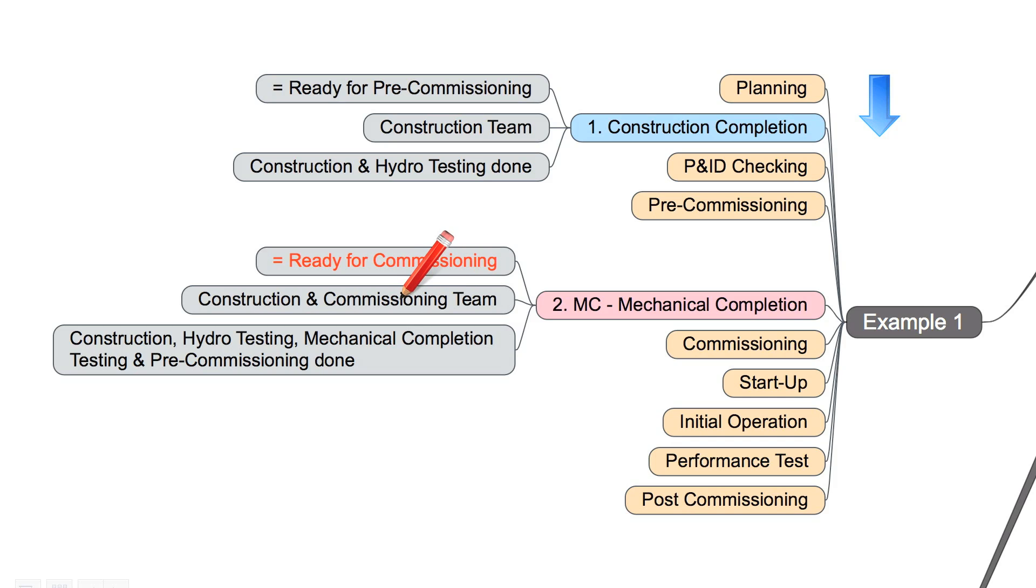And in this task the construction and commissioning team is involved. And this means in detail construction is done, hydro testing is done, mechanical completion testing and pre-commissioning is done. Therefore we have here another milestone called construction completion, which means ready for pre-commissioning. Mainly the construction team is involved and it means construction and hydro testing is done.